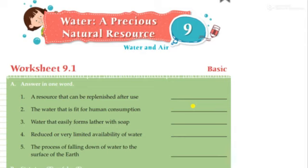This is worksheet 9.1, a basic worksheet where filling the blanks is there. The first part asks about resources that can be replenished after use — you have to tell whether it is renewable or non-renewable. Water that is fit for human consumption is called potable water. Water that easily forms lather with soap is soft water.